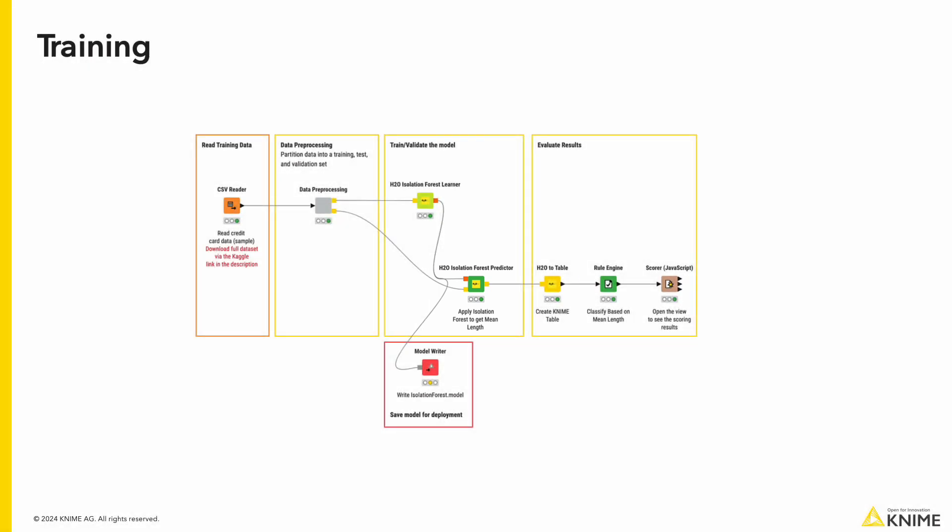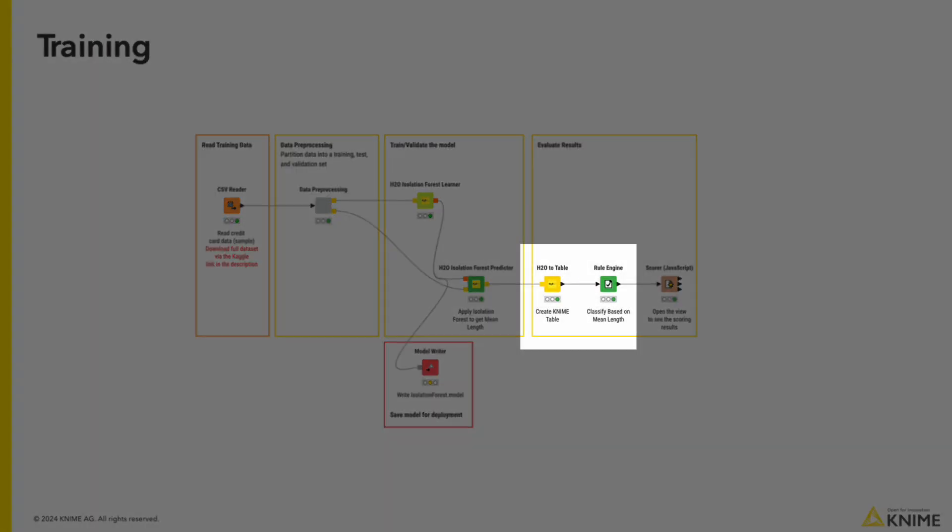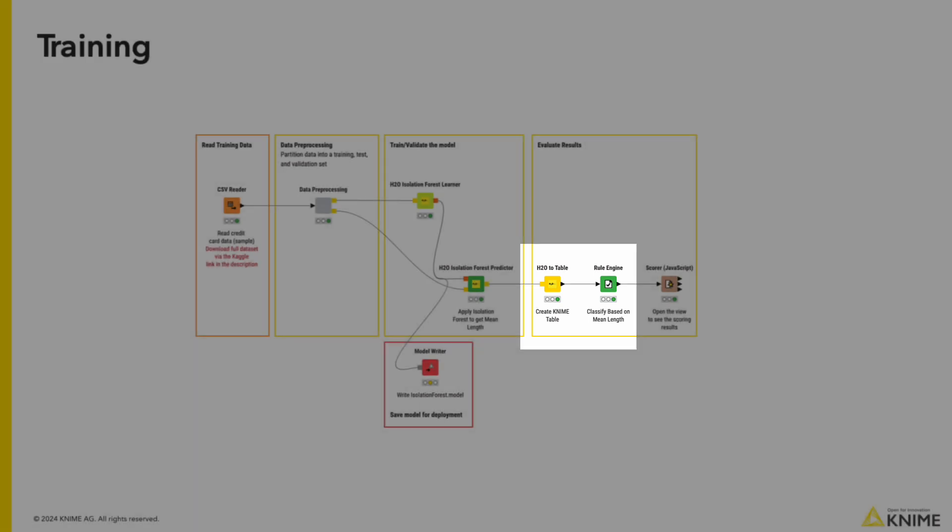As it is in a H2O data frame, we need to convert it back to a KNIME table and then we can use the rule engine to classify based on a set mean length. Now, a low mean length implies the data point is easily separated from the others and a high mean length implies a data point that is harder to separate. Because of this and after some trial and error, we use the rule engine to label any data points with less than six mean length as a fraud.